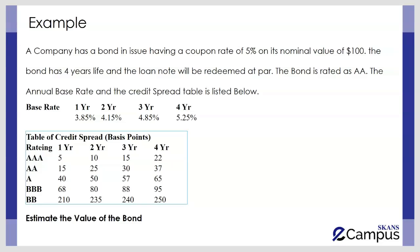In the example, a company has a bond in issue with a coupon rate of 5% and its nominal value is $100, and that means the annual interest is 5% times $100, which is $5. The bond has 4 year life and the loan will be redeemed at par. The bond is rated as AA, and the annual base rate and the credit spread table is listed below. We have to estimate the value of the bond.